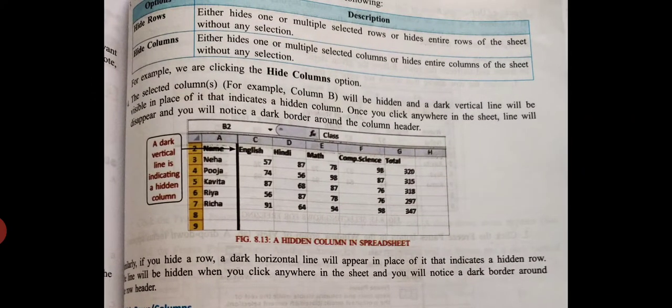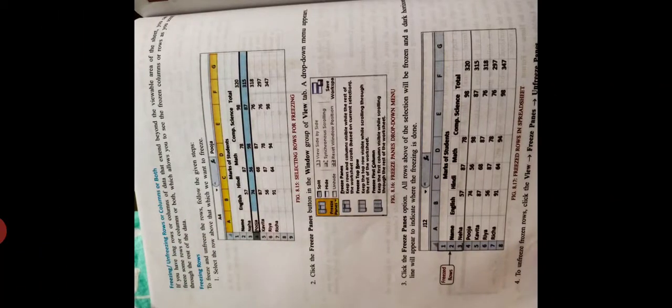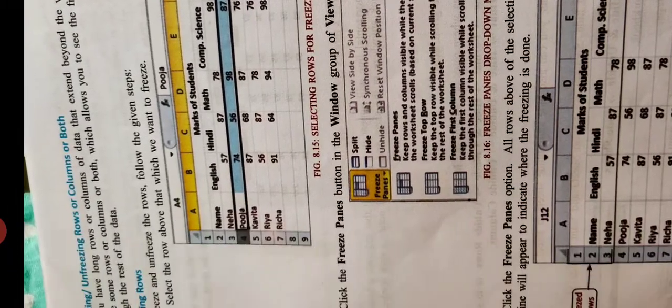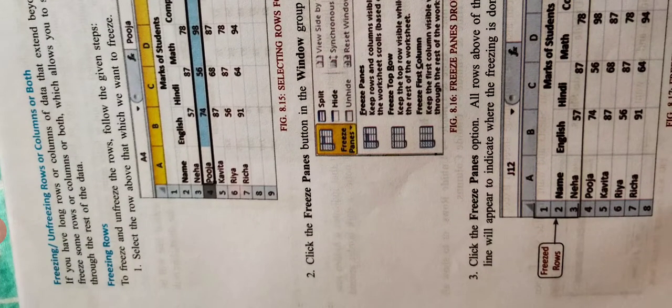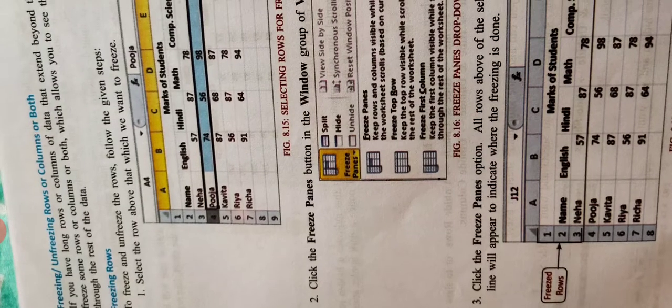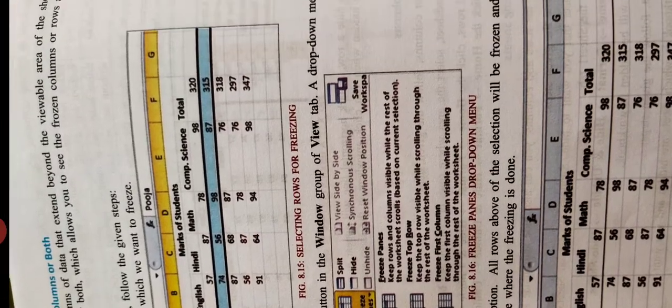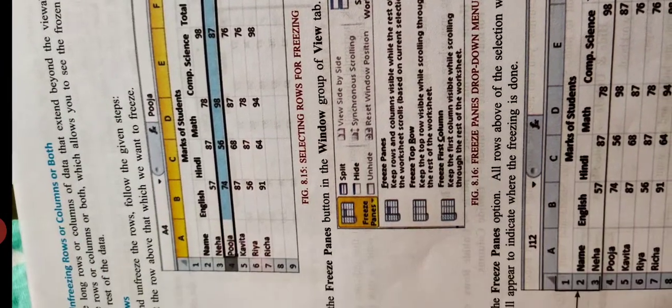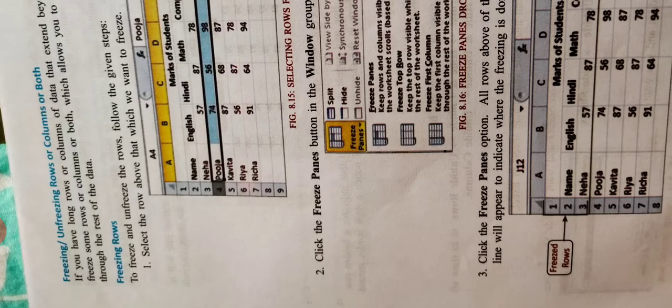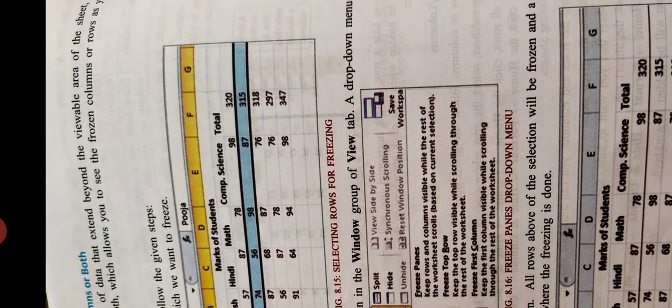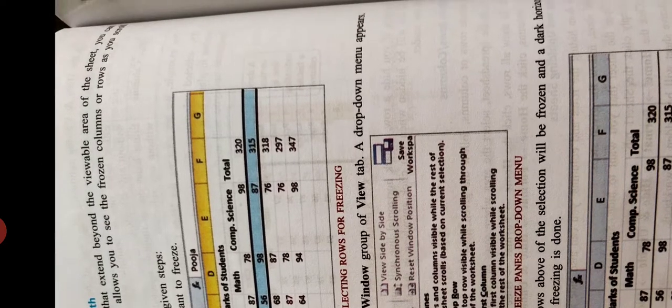Now freeze. Freezing or unfreezing rows or columns or both. If you have long rows or columns of data that extend beyond the viewable area of the sheet, you can freeze some rows or columns or both, which allows you to see the frozen columns or rows as you want to freeze or unfreeze.